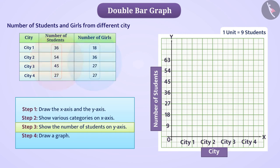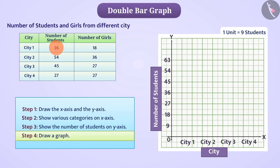The maximum value here is 54. But for our convenience, we have taken numbers up to 63 on the y-axis. Step 4. Now we will draw a graph. We will denote the number of students coming from city 1 and the number of girls with a pair of bars in which one bar will represent the number of students and the other bar will denote the number of girls.